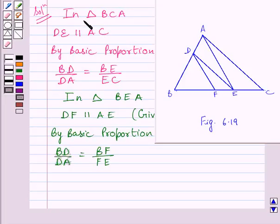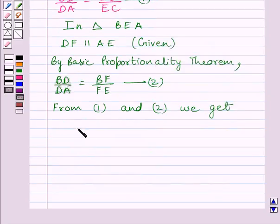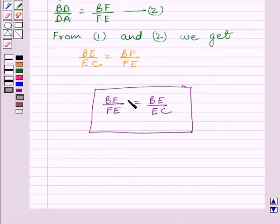Clearly, in triangle BCA, BD upon DA is equal to BE upon EC — let us name this expression 1. And in triangle BEA, BD upon DA is equal to BF upon FE — let us name this expression 2. From expressions 1 and 2, since both ratios are equal to BD upon DA, we get BE upon EC is equal to BF upon FE. So we have proved BF upon FE is equal to BE upon EC. This is our required answer. Hence proved. This completes the session.